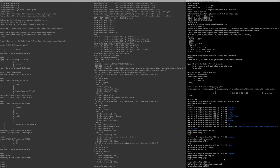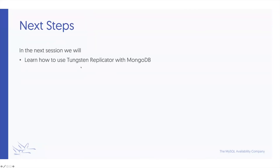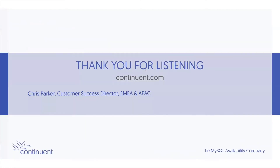In summary, we looked at replicator flow, configuration differences for Hadoop, Redshift, and Vertica, DDL scan, how to get data in, and how to set everything up, finishing with a demonstration of Redshift and Vertica. In the next session we'll look at MongoDB — it doesn't fit into traditional data warehousing and isn't JDBC, so it gets its own dedicated session covering how we work with documents in Mongo. Thank you for listening, I hope you found it useful, and I look forward to speaking to you again very soon.